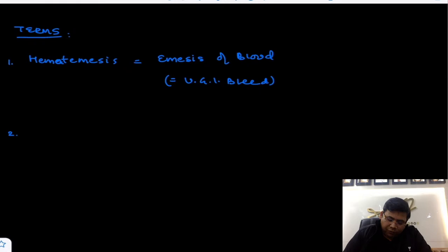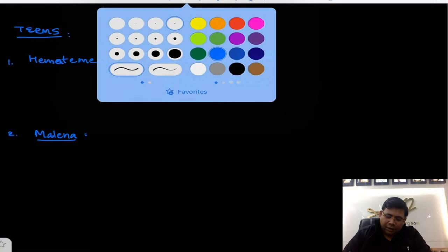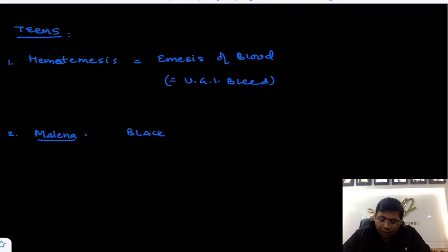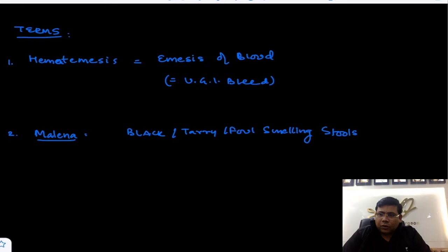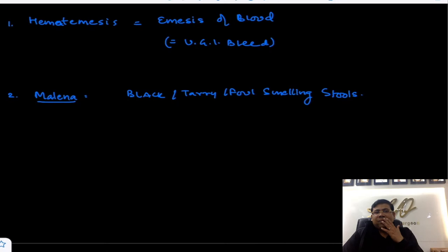The next concept is melena. Melena has a very simple, straightforward description — it is black tarry, foul-smelling stools. This is what is known as melena. The blood has hemoglobin, and the acid of the stomach oxidizes the hematin into acid hematin.